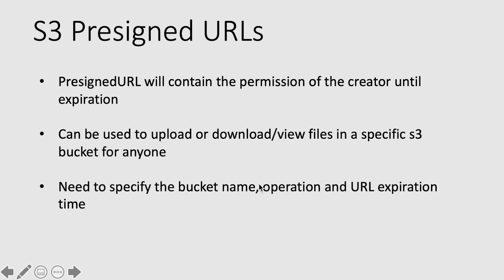Here's something important to remember. If it is an IAM user creating the URL, IAM users have long-term credentials, so the expiration depends solely on the expiration time you define. However, if it is an AWS service that assumes an IAM role, those roles have temporary credentials. If the role's credentials are expired, then regardless of the defined expiration time, the pre-signed URL will also be expired.